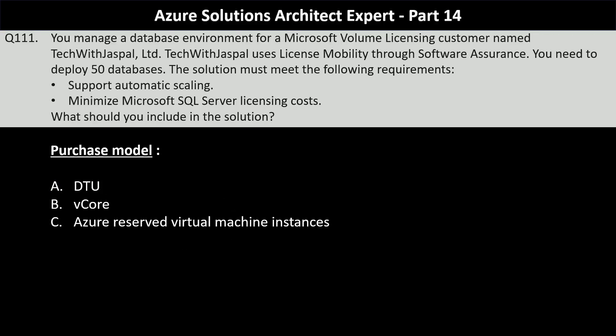Question 111: You manage a database environment for a Microsoft volume licensing customer named Tech with Jaspal Ltd., which uses license mobility through software assurance. You need to deploy 50 databases, and the solution must support automatic scaling and minimize Microsoft SQL Server licensing costs. The first part of the question asks about the purchase model. The options are DTU, vCore, and Azure Reserved Virtual Machine Instances. You should choose the vCore purchase model.